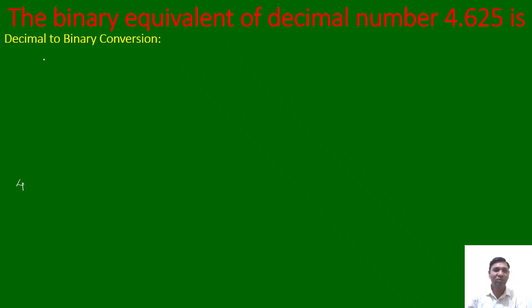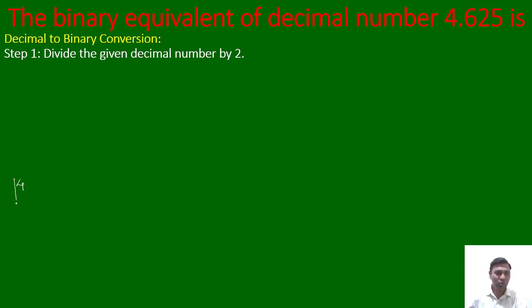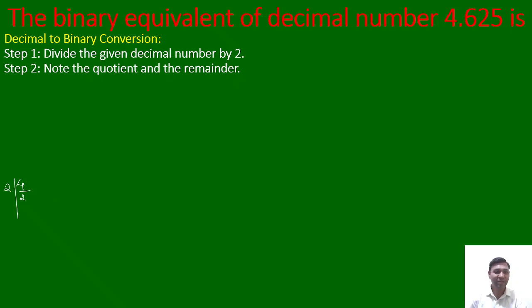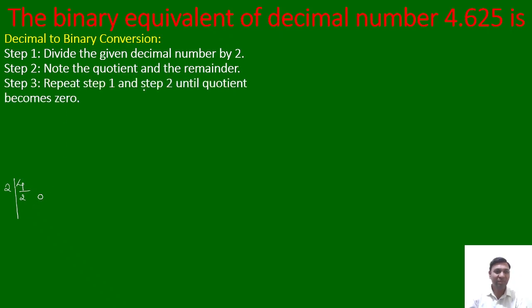Let me write 4 first, then we will follow the decimal to binary conversion procedure. Step 1: divide the given decimal number by 2. So I have to divide 4 by 2. Step 2 says note the quotient and the remainder. So here the quotient is 2 and the remainder will become 0.